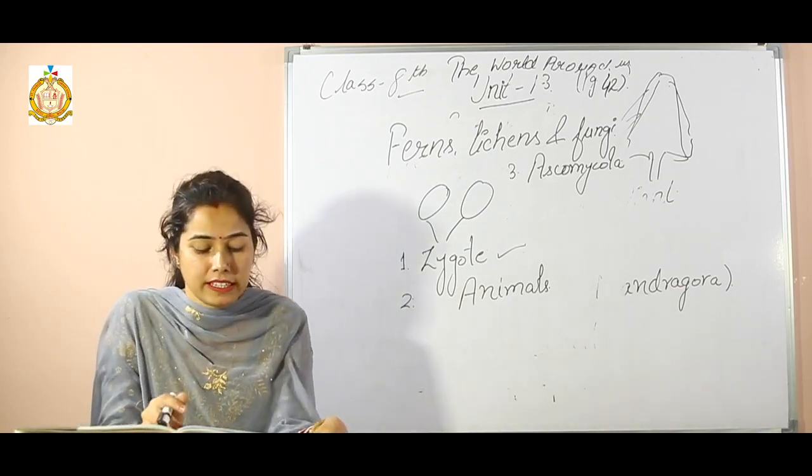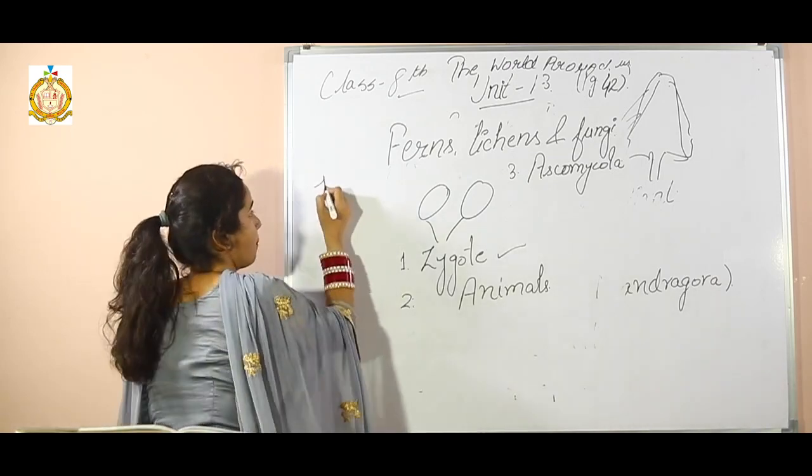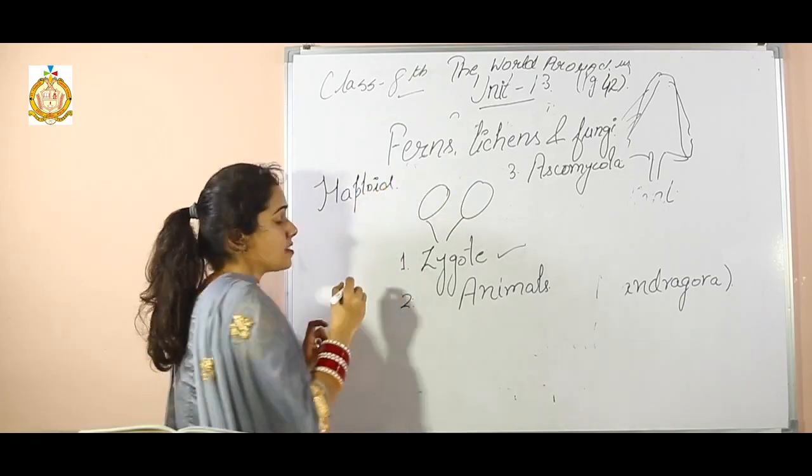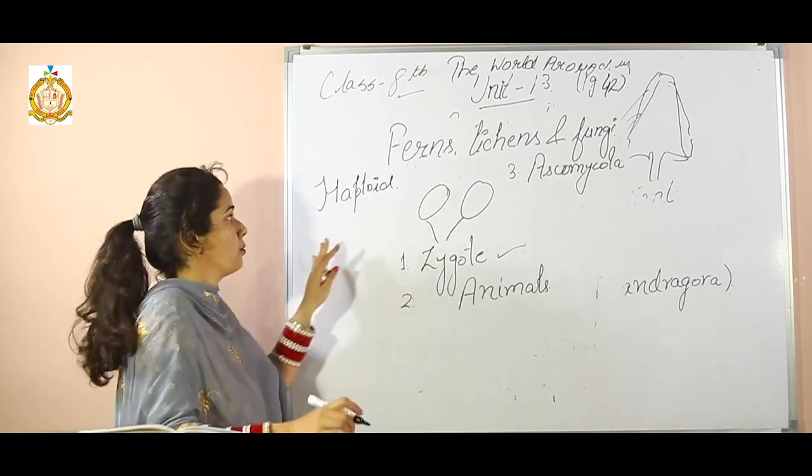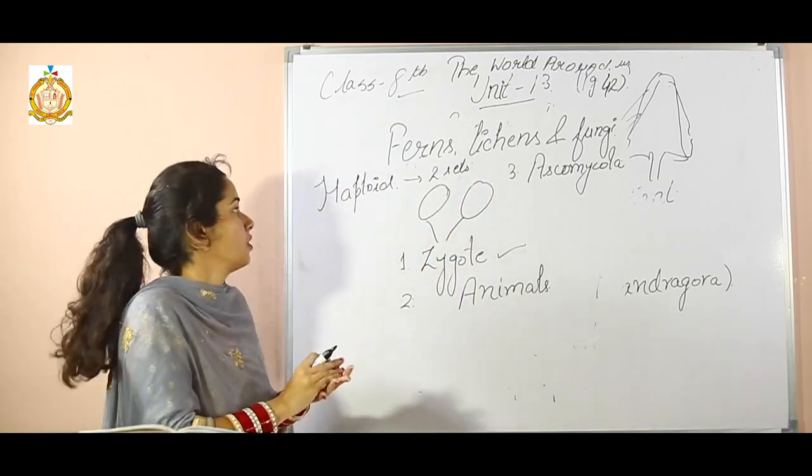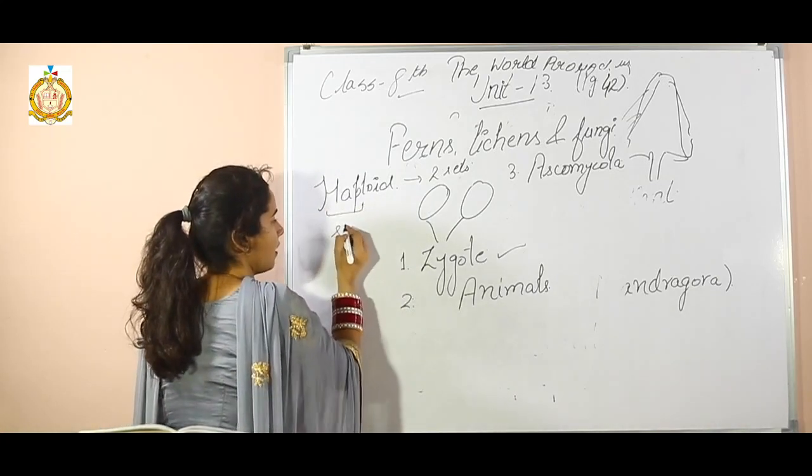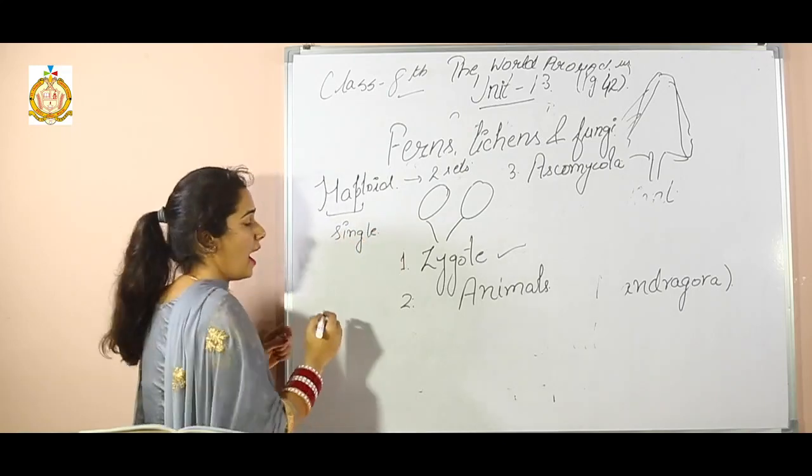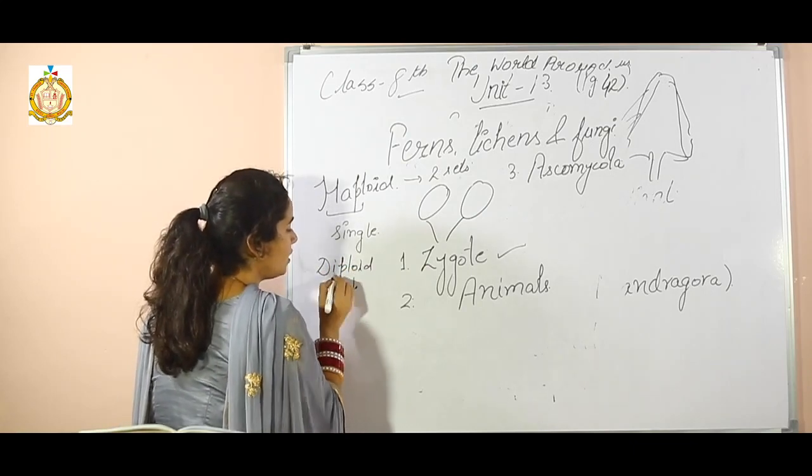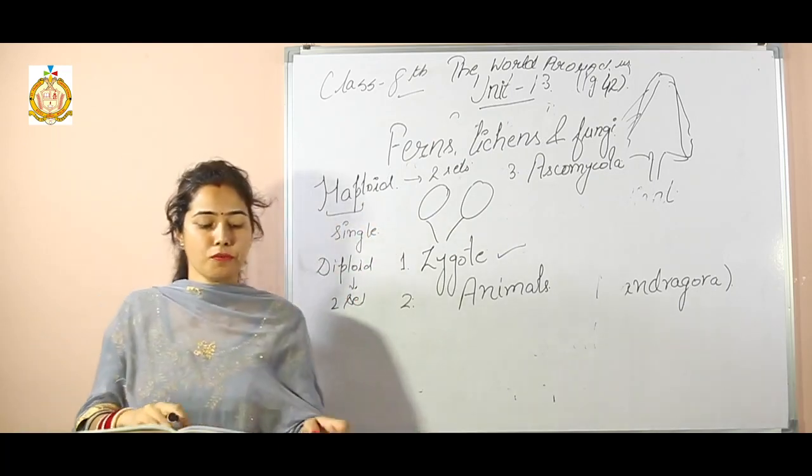The third question: haploid genomes contain two sets of chromosomes. What does haploid mean? The sentence says two sets of chromosomes. Is this true or false? This is false because haploid means single and diploid means two. With diploid, two sets, and with haploid, single set.